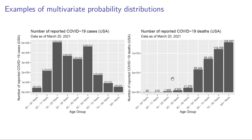The first example I'm going to look at is the distribution of COVID-19 reported cases in the US and deaths by age group. I have two variables, so a bivariate distribution of age group against COVID-19 cases in the USA. You can see the number of cases reported are higher for the 18 to 29 years age bucket compared to 85 plus or 75 to 84.